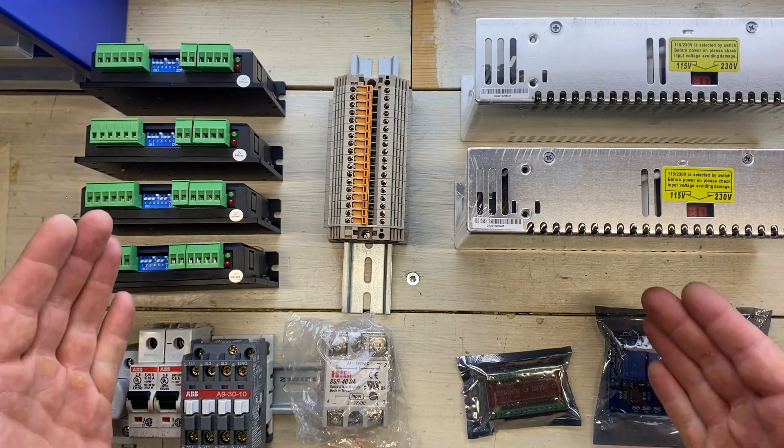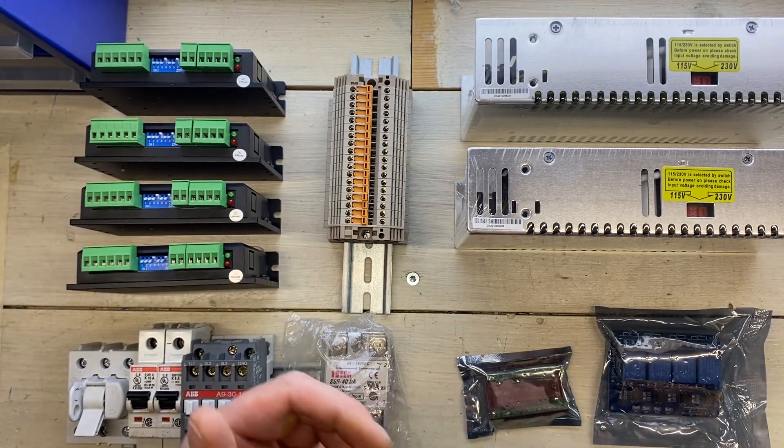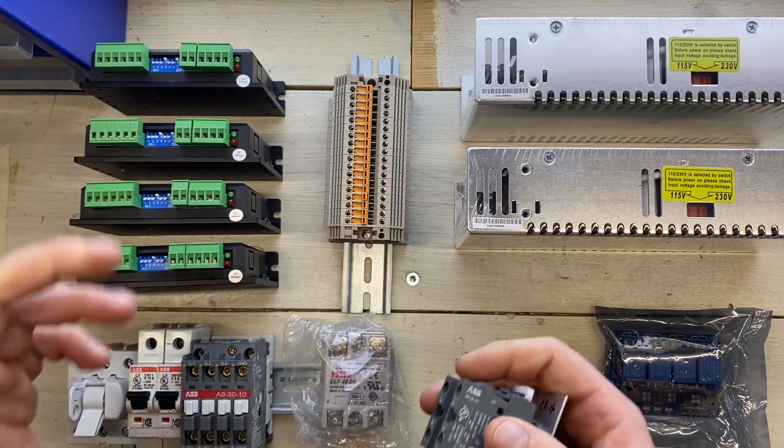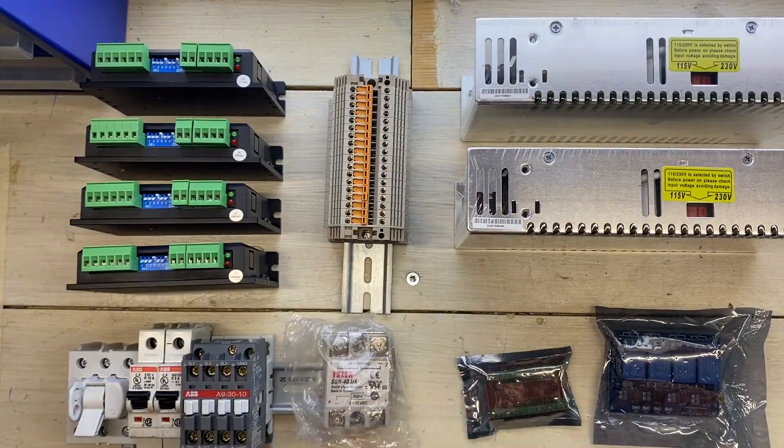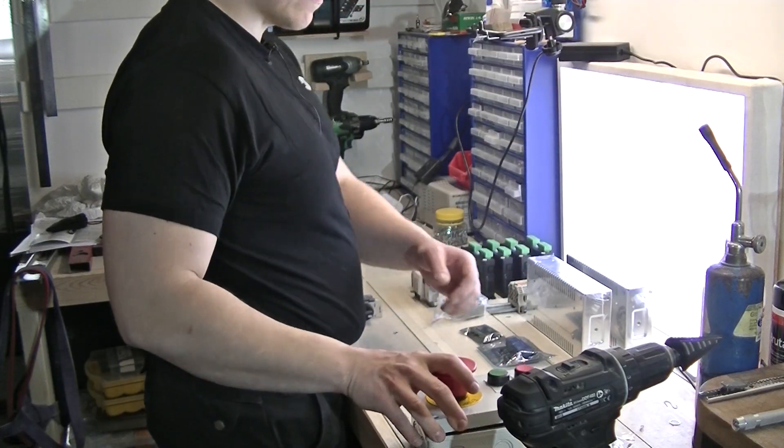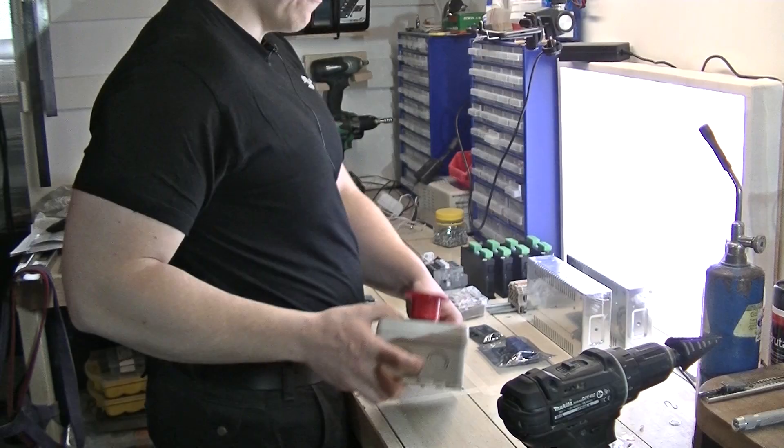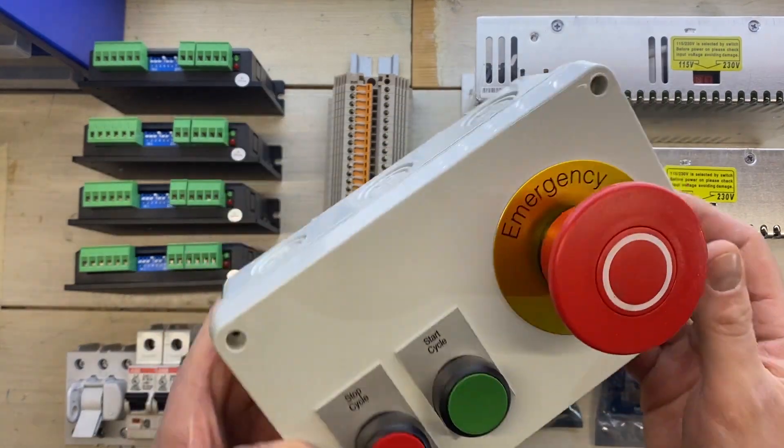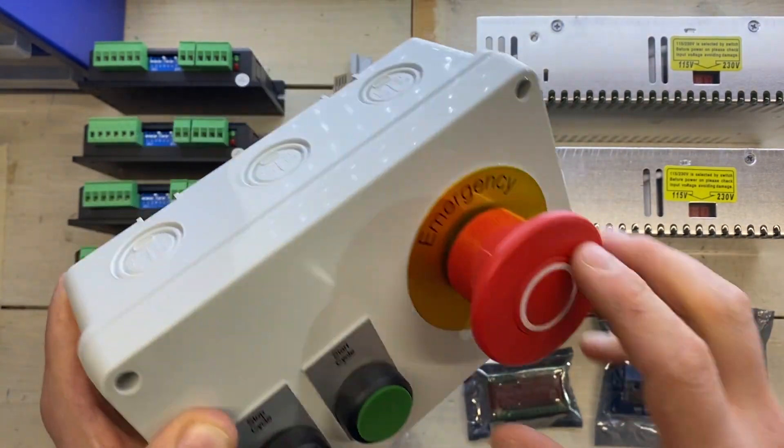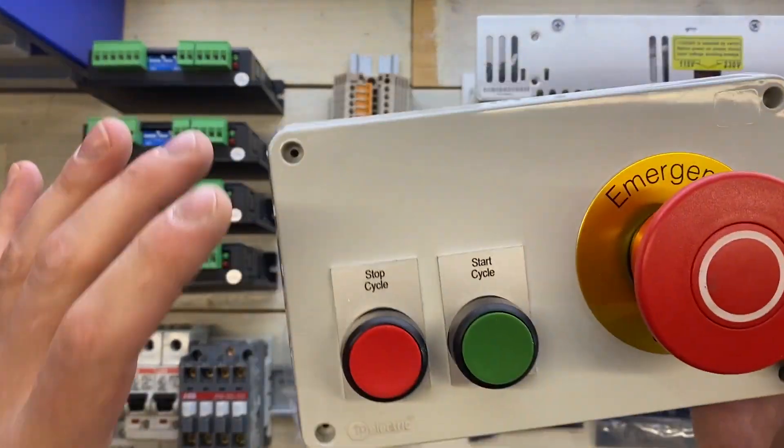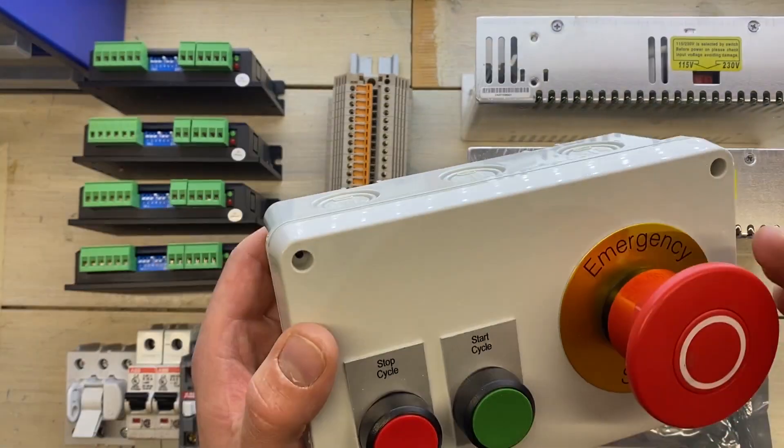Or to be more precise, the PC will act as a smooth stepper slash breakout board. And this is just a bunch of terminal blocks with integrated disconnects, which is really awesome for testing and troubleshooting purposes. So this is everything that will sit inside the electrical cabinet. Apart from this, I will use this momentary on-off switch to control this power contactor. And of course this, which will be my start cycle, stop cycle and my emergency stop switch.